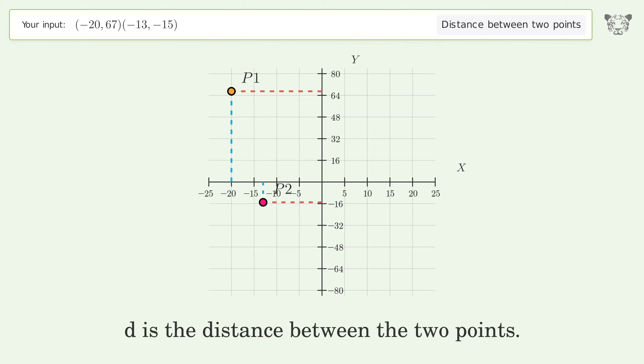First, take the square root of both sides of the Pythagorean theorem. This gives us the distance formula. Plug the coordinates of the points into the formula.